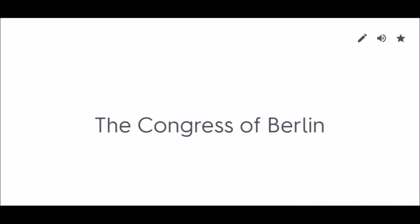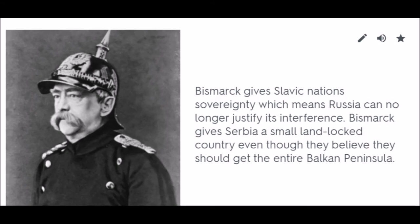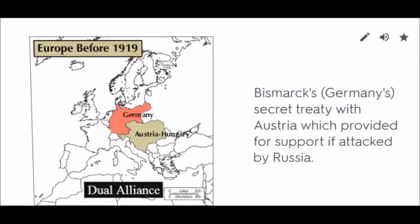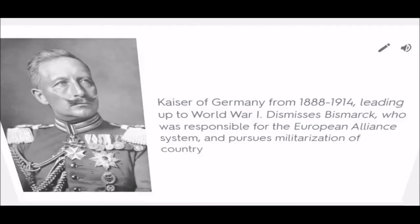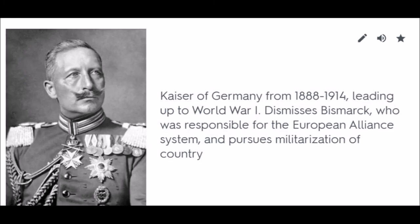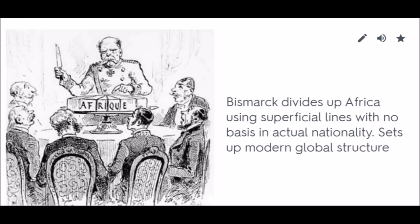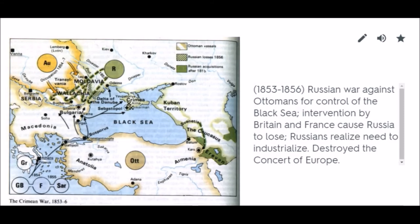Congress of Berlin: Bismarck gives Slavic nations sovereignty, meaning Russia can no longer justify its interference. Bismarck gives Serbia a small landlocked country even though they believe they should get the entire Balkan Peninsula. Dual Alliance: Bismarck's secret treaty with Austria which provided for support if attacked by Russia. Wilhelm II: Kaiser of Germany from 1888 to 1914, dismisses Bismarck who was responsible for the European alliance system, and pursues militarization. Conference of Berlin: Bismarck divides up Africa using superficial lines with no basis in actual nationality, setting up the modern global structure. Crimean War: A Russian war against the Ottomans for control of the Black Sea. Intervention by Britain and France caused Russia to lose, and Russians realized the need to industrialize. This destroyed the Concert of Europe.